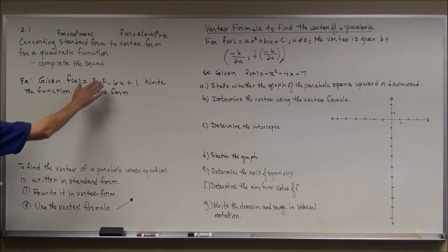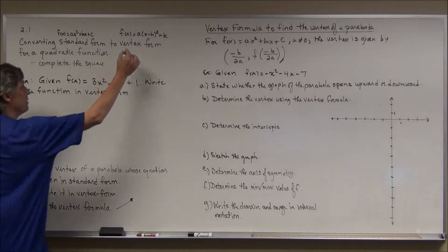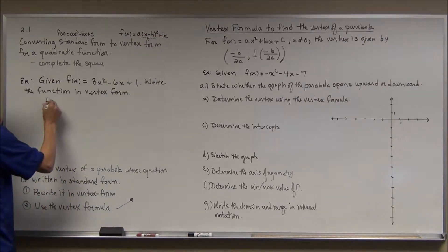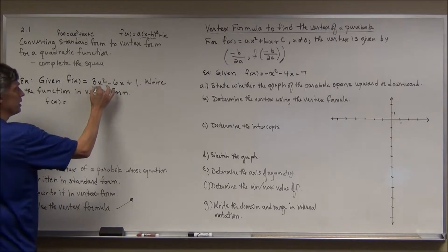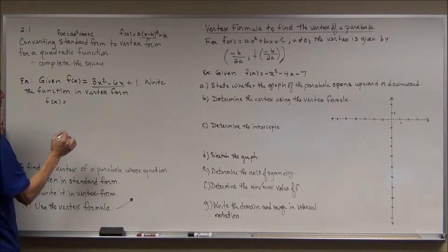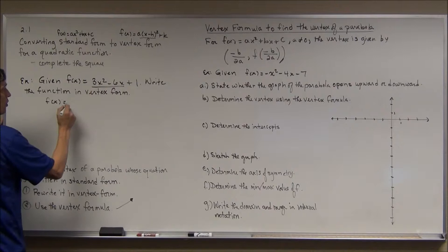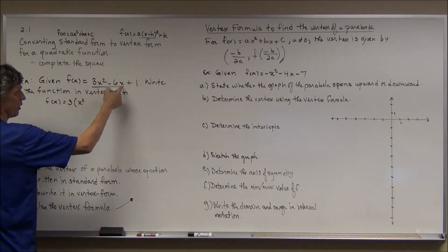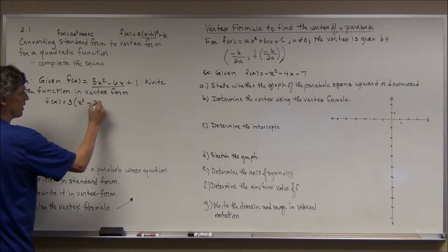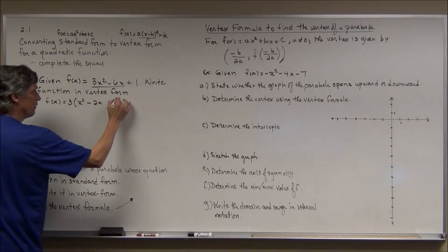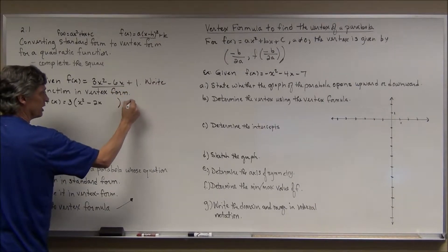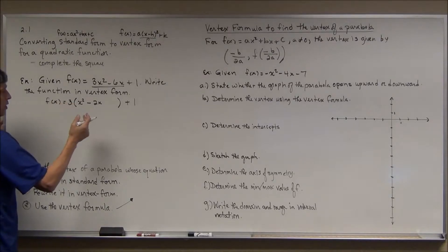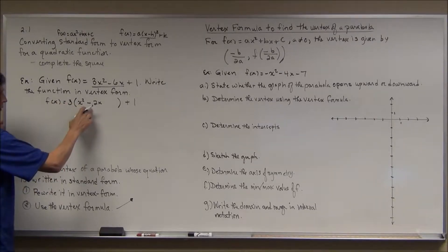This is standard form, so I'm going to rewrite it in vertex form, which means I need to complete the square. My first step is to take the two terms that contain the variable and factor the lead coefficient out of those two terms. I'm going to factor 3 out of 3x², leaving x², and 3 out of -6x, leaving -2x, with a little space inside the parentheses. The +1 stays outside — I'm not factoring out of that. Now I complete the square.